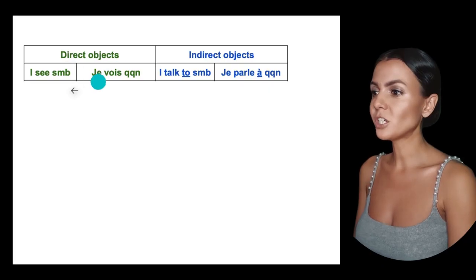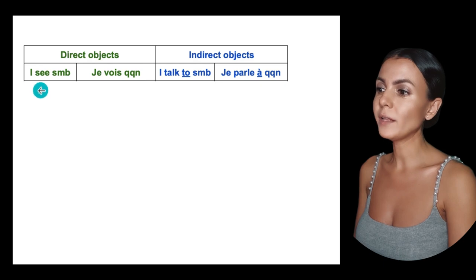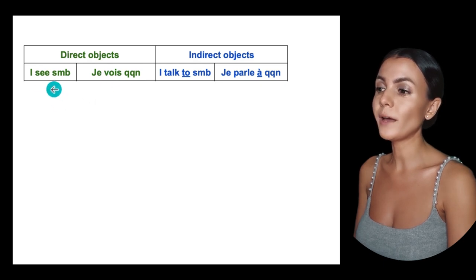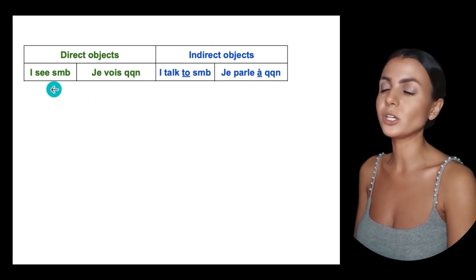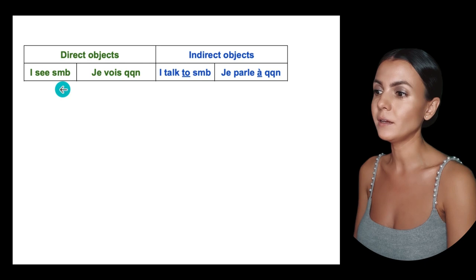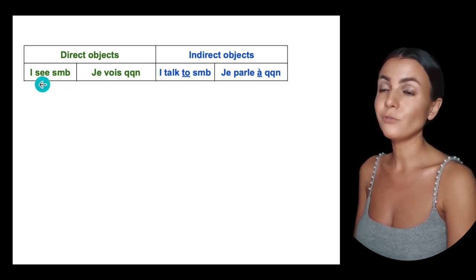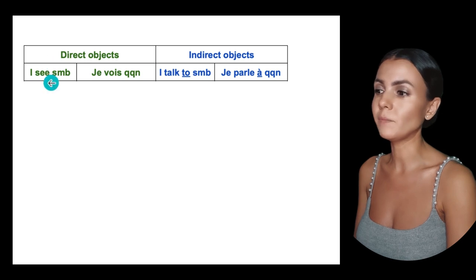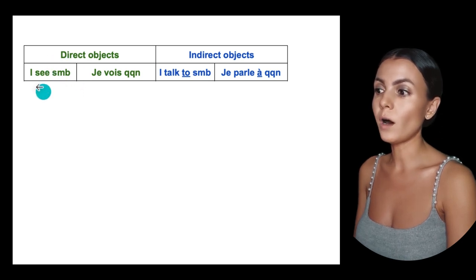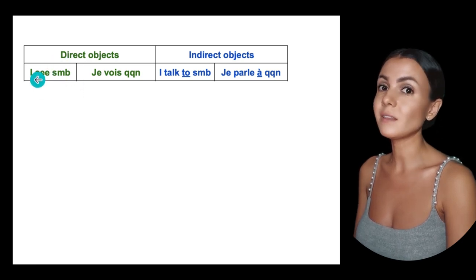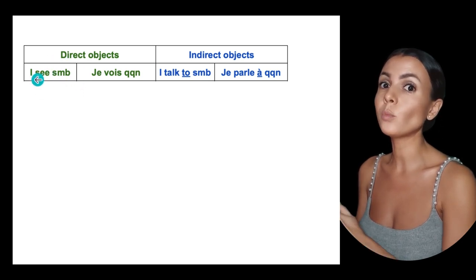Direct objects are when there is nothing between the verb and the object. For example, 'I see somebody' — 'see' is the verb, 'somebody' is the object, and there is nothing in between. There is no preposition.